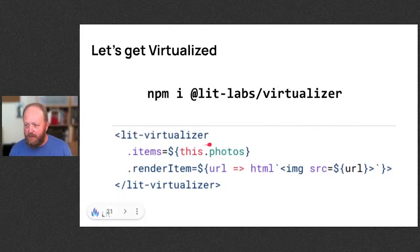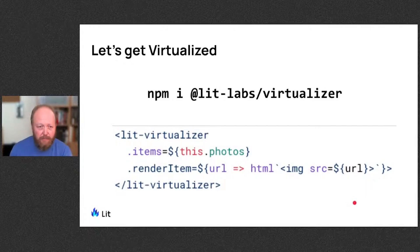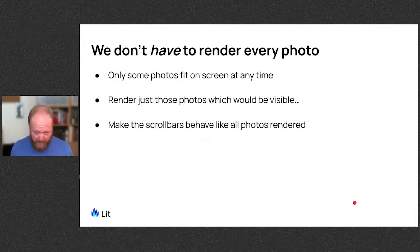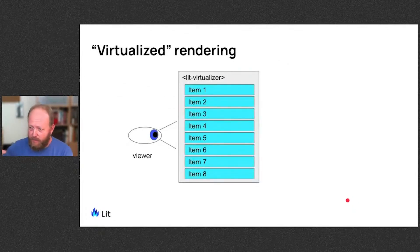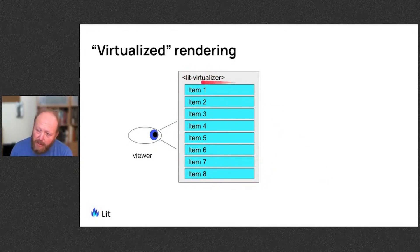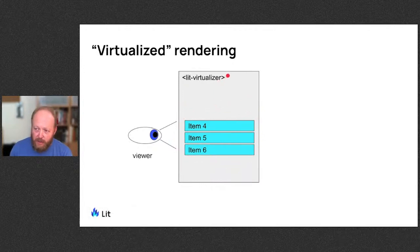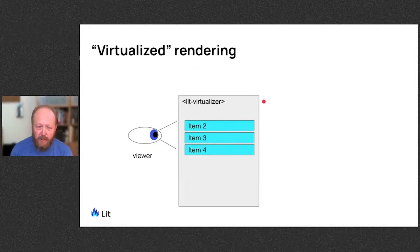You define the items you're going to render and then define a little template to render each item. It's a really simple interface — you can probably get up and started in about a minute. The premise is you don't have to render everything. We're only showing some items on the screen at any given time. What if we just rendered the ones that are actually visible, and made the scrollbars act as if we did render everything so it feels natural? Lit-virtualizer only renders the things that are going to be in view in the viewport, but it keeps its container size as if it was rendering all items.